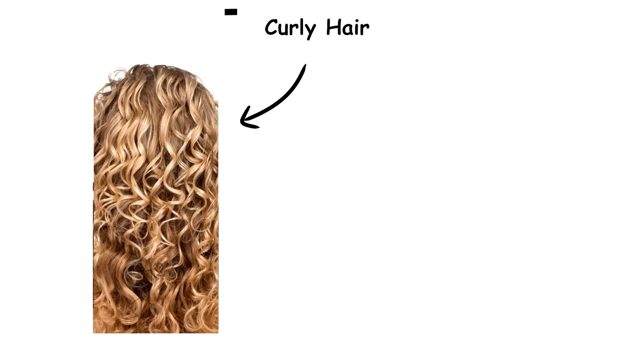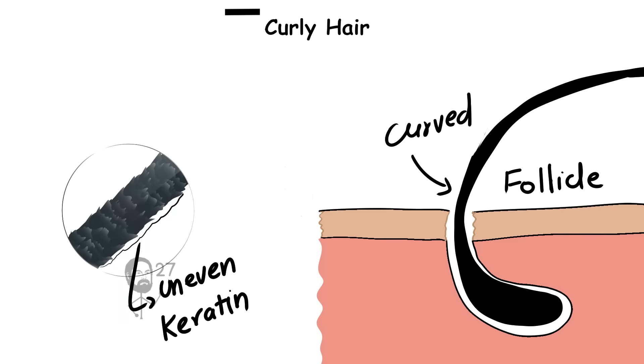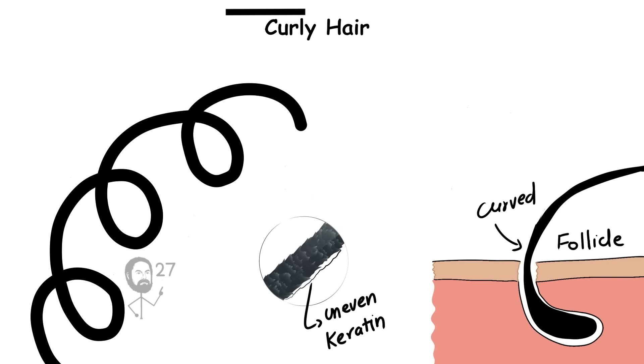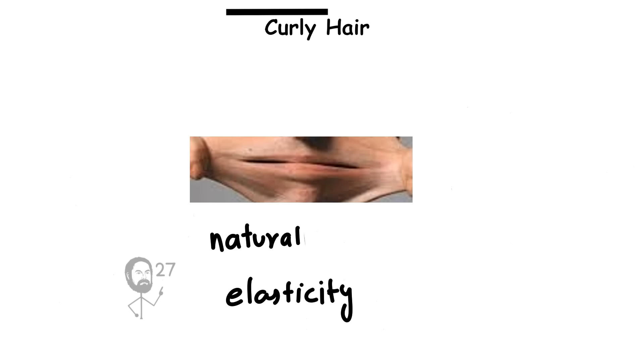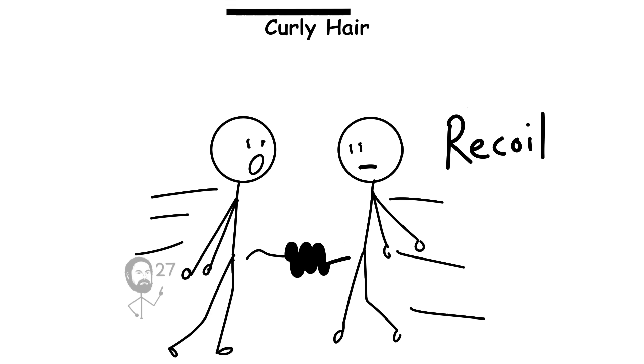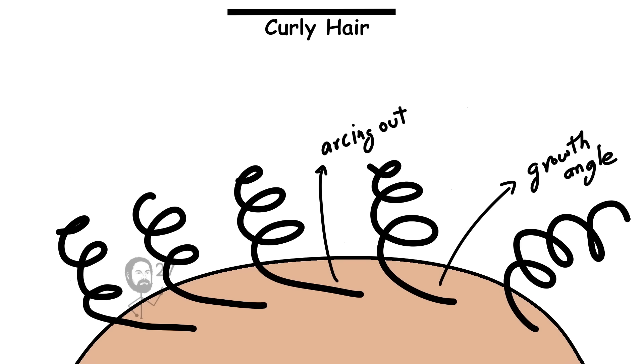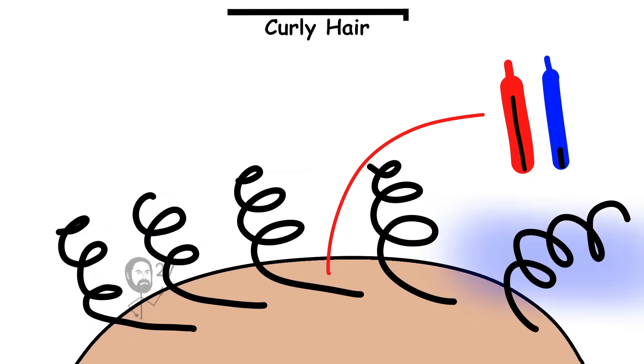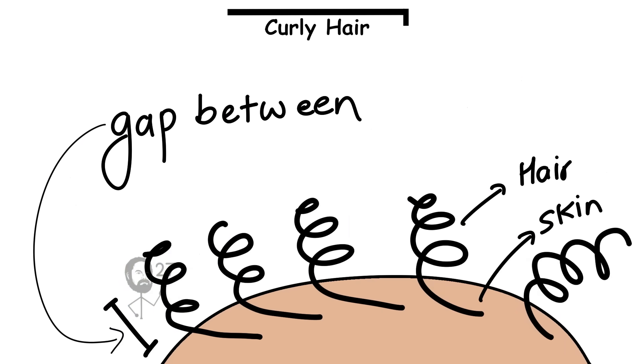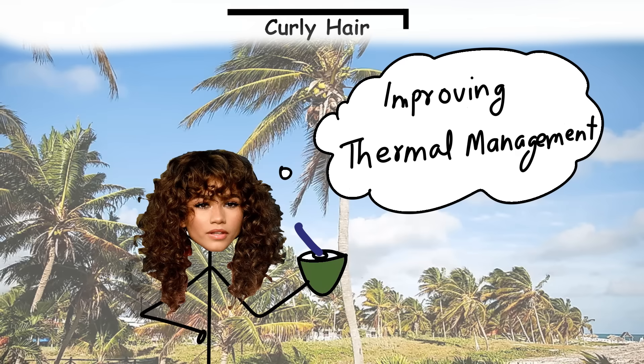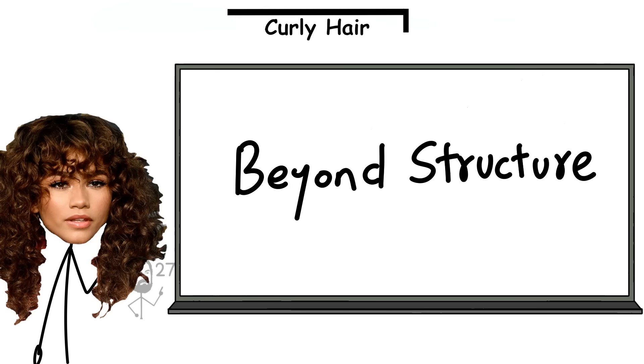Curly hair develops from a curved follicle and uneven keratin distribution, which causes the strand to bend into spirals. This creates natural elasticity that lets the hair stretch and recoil without breaking easily. The hair's growth angle, arcing outward from the scalp, also helps regulate airflow and skin temperature in humid climates by creating space between hair and skin, improving thermal management in tropical environments.